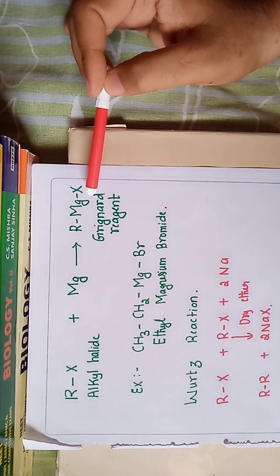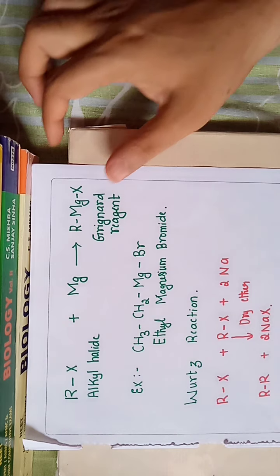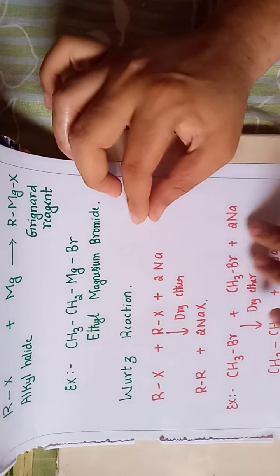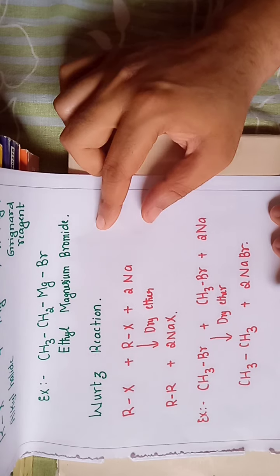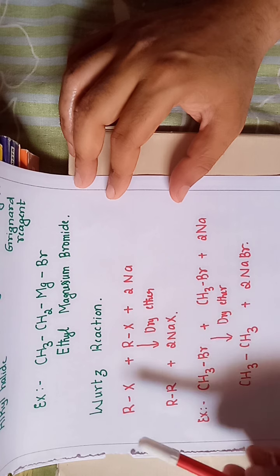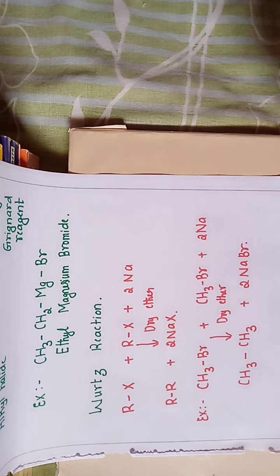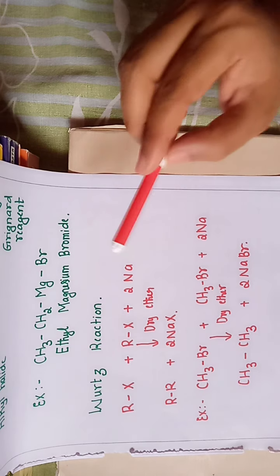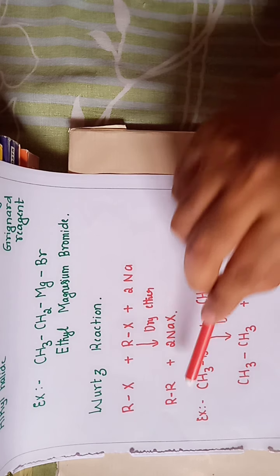Remember, the general formula of Grignard reagent is RMgX. Now, another important reaction of alkyl halide with a metal is the Wurtz reaction. In the Wurtz reaction, alkyl halide RX reacts with sodium metal in the presence of dry ether to give a higher alkane.